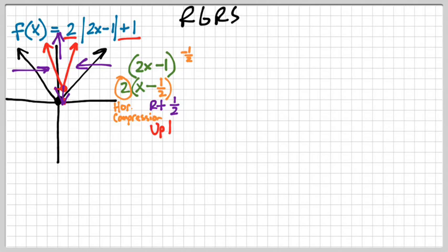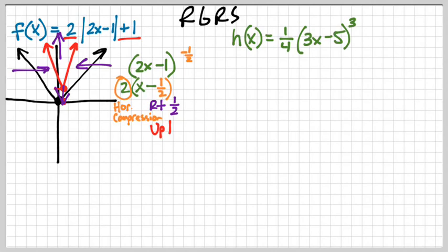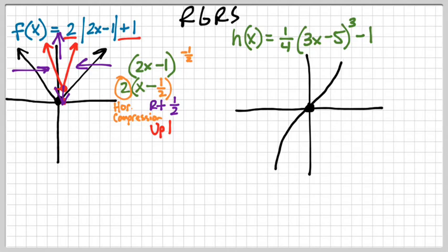Let's do another example with a cubic function: h(x) = (1/4)(3x - 5)³ - 1. That has a lot going on, but we've got this. Using RGRS, I realize it's a cubic function — critical point at (0, 0), goes from down to up, something like that. There's no reflection because there's no negative in front. Now let's deal with the shifts: I notice there's something in front of x, so I write that parenthesis off to the side: 3x minus 5.